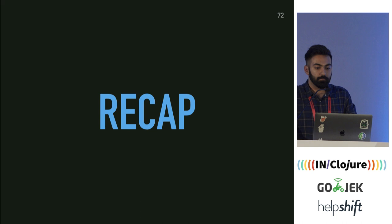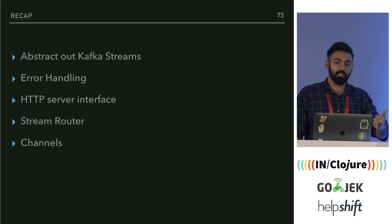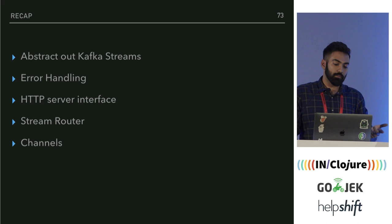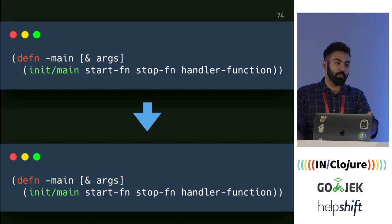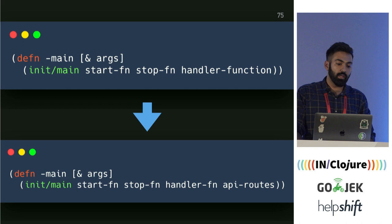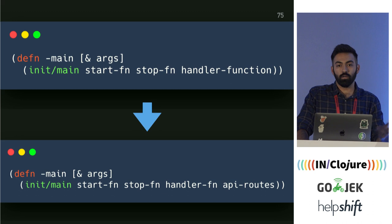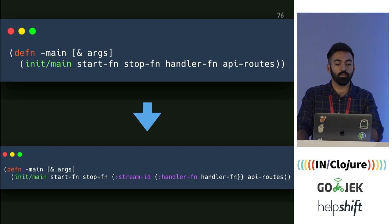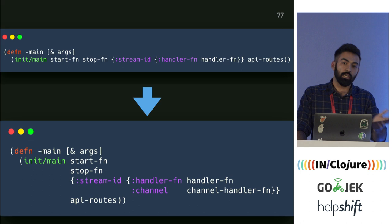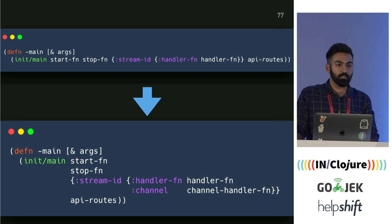To recap: we abstracted out Kafka Streams using Stream Notification Service. Then we added error handling using Payments Processor. Then we added an HTTP server interface using Nearby Driver Actor. Then we had a stream router from Passbook Clerk. And finally we added channels from Chatter. The interface started accepting keywords — success, retry, skip — then API routes were added as an optional parameter, then a breaking change introduced the stream router, and finally channels were added as an optional feature. RabbitMQ is an optional dependency in Ziggurat — if you don't want retries or channels, you can turn that off in the config.